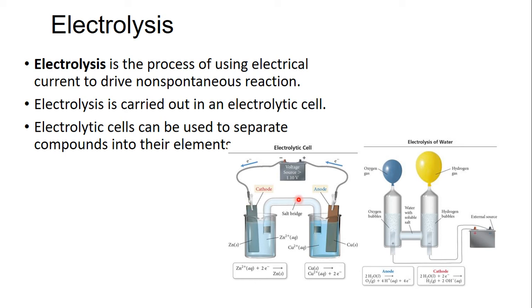But this is a non-spontaneous reaction. Normally the electrons would leave from zinc and go to copper. So we have to have a battery to power this reaction. One practical application of this is the electrolysis of water where we can split water and create hydrogen gas and oxygen gas. About a decade ago, an idea was could we power cars with hydrogen and our source of hydrogen would have been the electrolysis of water.